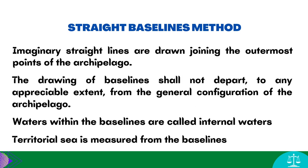How do we draw our baselines? Imaginary straight lines are drawn joining the outermost points of the archipelago, enclosing an area the ratio of which should not be more than 9 to 1 — water to land — provided that the drawing of baselines shall not depart to any appreciable extent from the general configuration of the archipelago. The waters within the baselines shall be considered internal waters, while the breadth of the territorial sea shall be measured from the baselines. Baselines are lines drawn along the low water mark of an island or group of islands which mark the end of the internal waters and the beginning of the territorial sea.